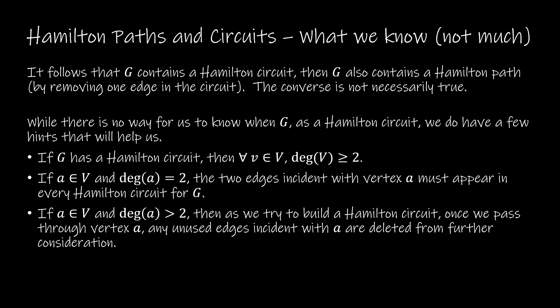The next condition: if vertex A has degree two, then the two edges incident with that vertex must appear in the Hamilton circuit. For example, in a graph where multiple vertices have degree two, you're forced to use all those edges. That means at some central vertex you'd end up passing through it more than once, so that graph does not have a Hamilton circuit.